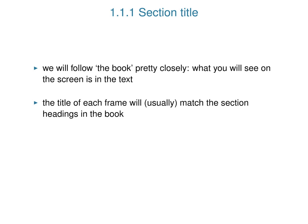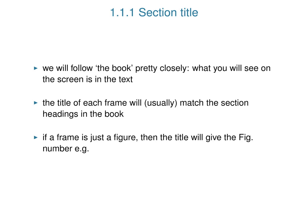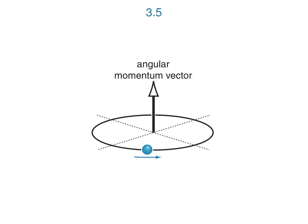Usually at the top of each slide there's a title, and that will match what's in the book. Occasionally there will be a figure which is a whole frame, and in those cases it will come up with something like '3.5' at the top, indicating it's figure 3.5. This is done so that if you are following along in the book as well as watching the video, you can see exactly where we are.